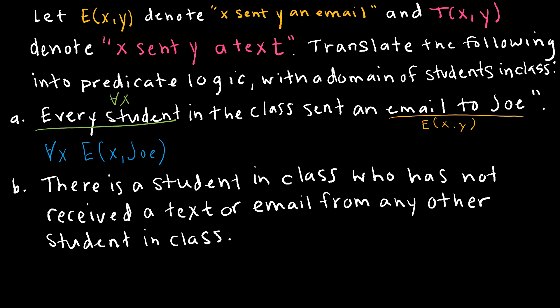Now the first one that I've written includes that Joe sent an email to himself. If you want to specify that Joe did not send an email to himself, you can snazzy it up just a little bit and say for all x, if x does not equal Joe, then E(x, Joe). So essentially saying if the student isn't Joe, then that student did send an email to Joe. So two different ways to write that depending on how specific you would like to be.